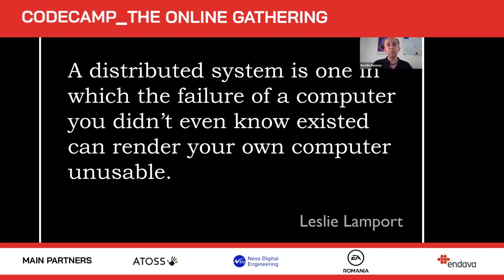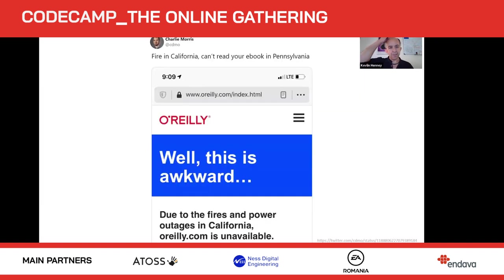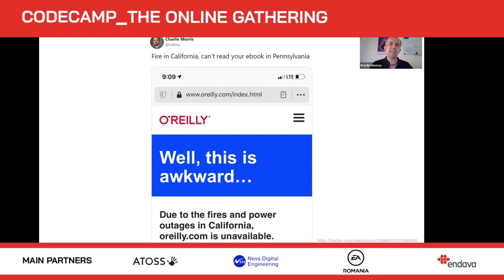This fulfills Leslie Lamport's observation: 'A distributed system is one in which the failure of a computer you didn't even know existed can render your own computer unusable.' We've been here before, but now we're doing it at a planet-wide scale and it is now normal. About a year ago a fire in California meant O'Reilly's Safari went down — you couldn't read your ebook in Pennsylvania. Fire in California, can't read your book in Pennsylvania. These highly connected systems have moments of locality that surprise us — the illusion that everything is uniformly distributed is just that, an illusion.